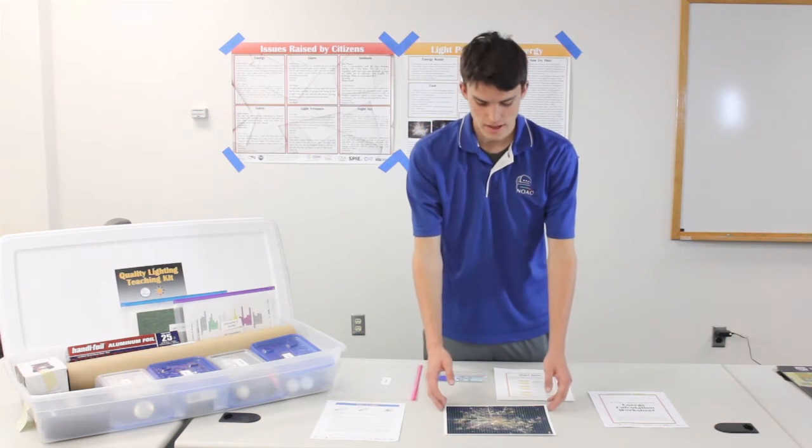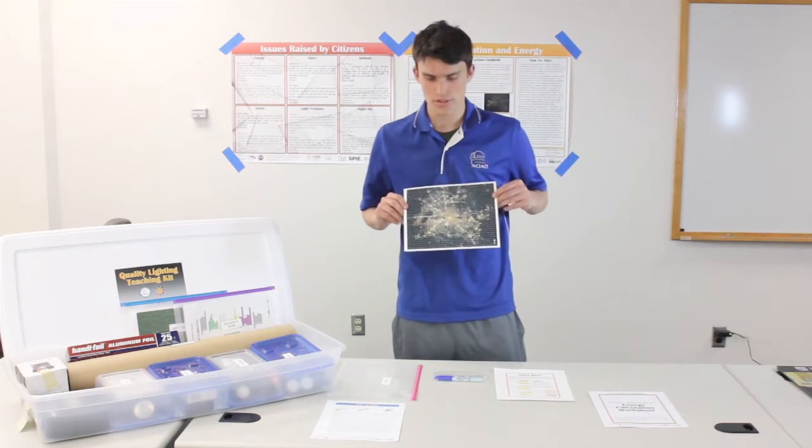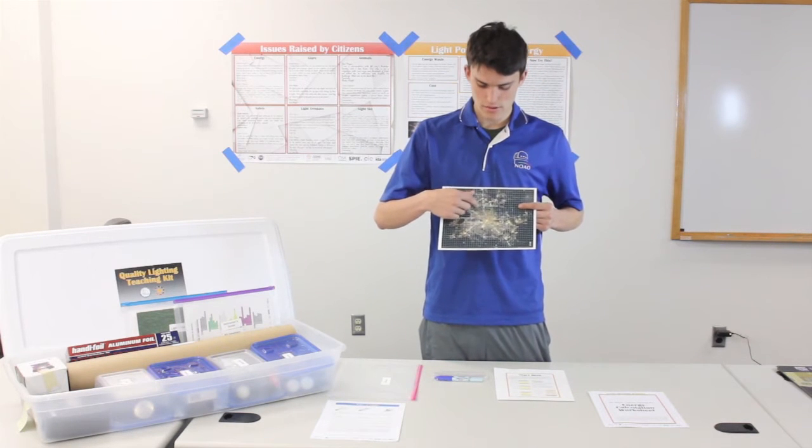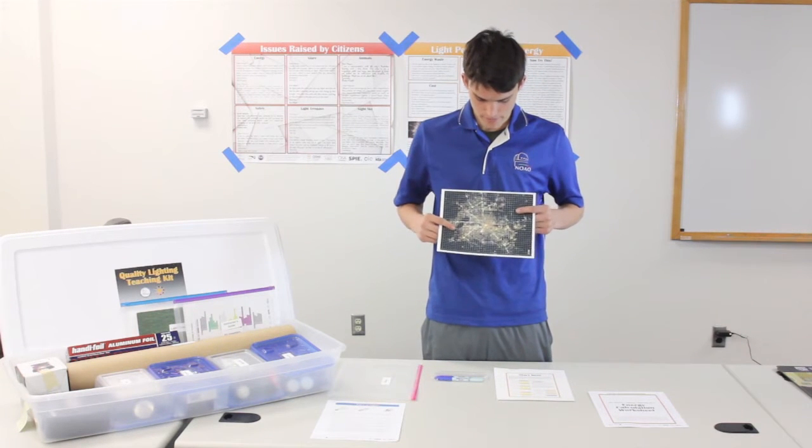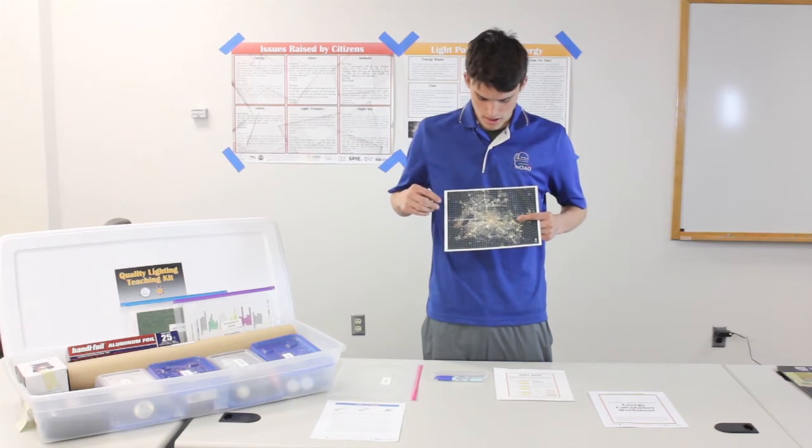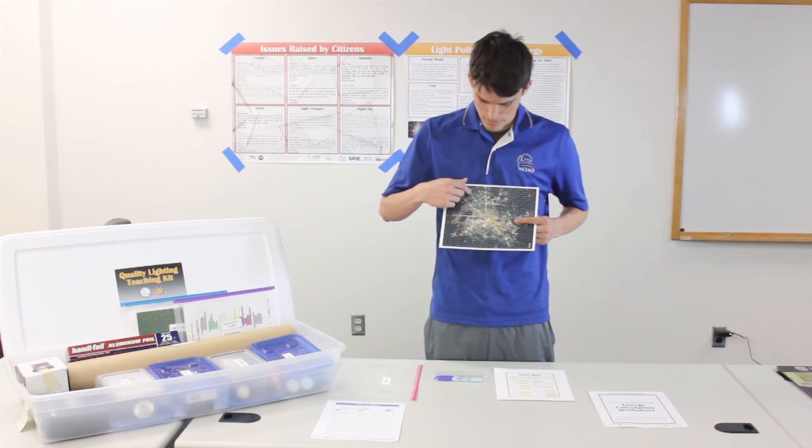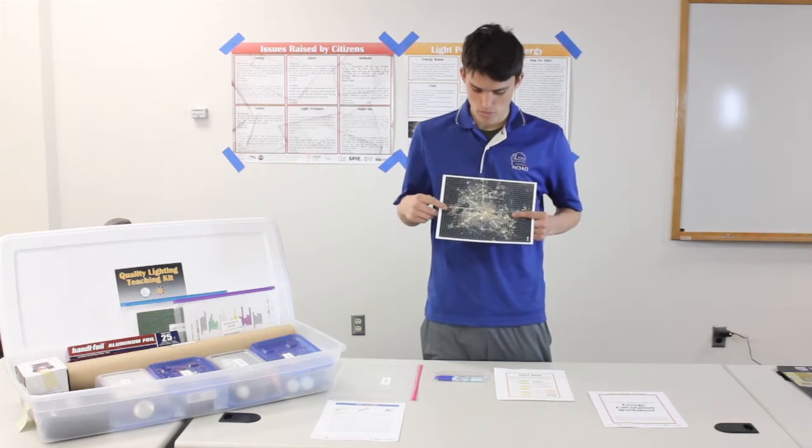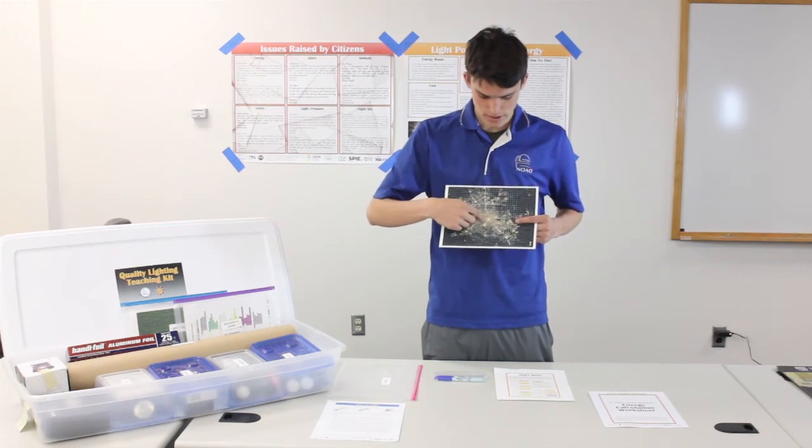In the first section of the activity, you will be using the map of Houston with a grid superimposed onto it. Each grid box is three by three kilometers. In each of the boxes, it might possibly have a different color light, whether it is brown, white, or yellow.